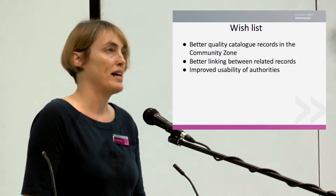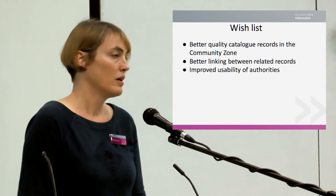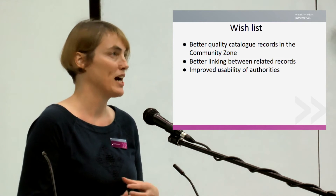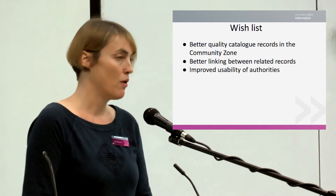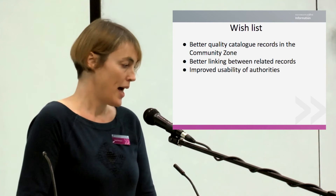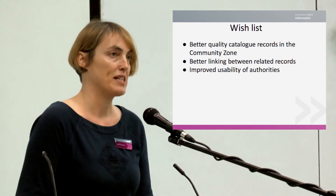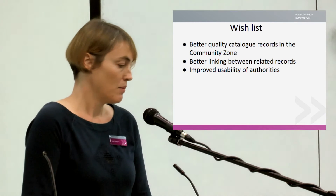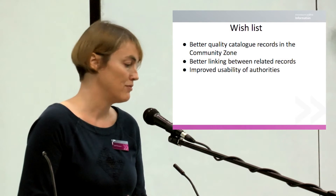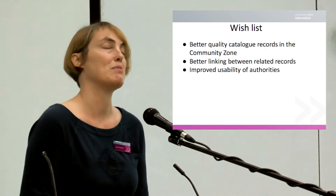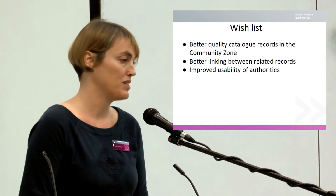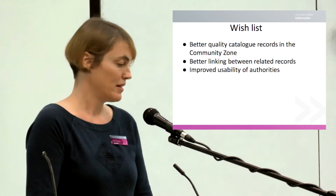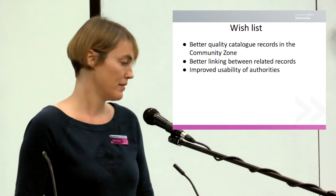On our cataloguing wish list, number one is better quality records. We'd also like to see better linking between related records — this is a bit patchy. When we have analytical records with parent-child relationships, they don't always link in the way we would expect, and Ex Libris are actively working on this. We'd also like improved usability of authorities — if you click for more detail on a Library of Congress authority record, you see a fixed list and can't scroll beyond what appears on screen.